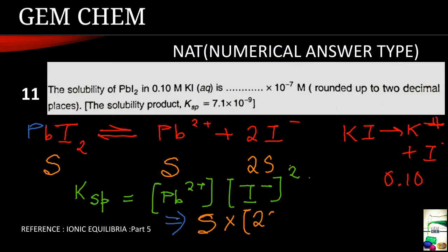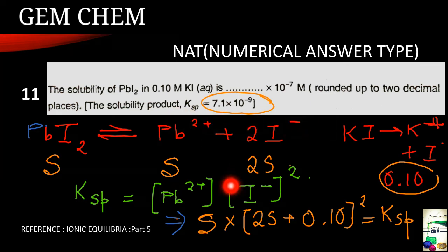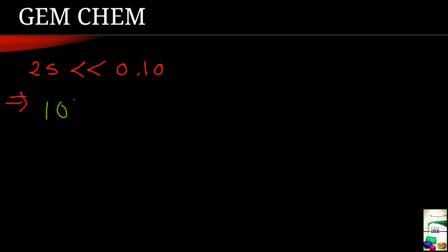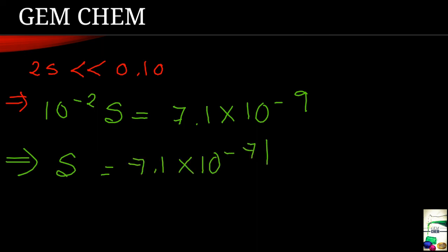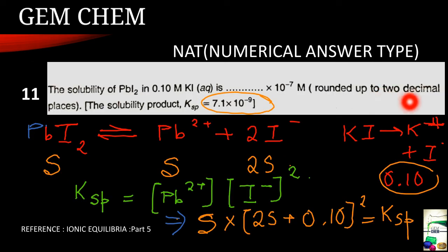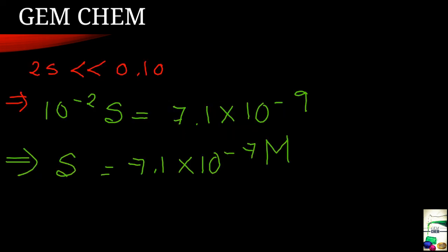Now we just substitute the values here, that is here Pb 2 plus is S multiplied by 2S plus this concentration of iodide 0.10 whole square and here we write the Ksp value. Now listen to it carefully, here the 2S value is much much smaller than 0.10 value so ultimately the expression which we can write is 10 to the power minus 2 into S only equals to 7.1 into 10 to the power minus 9. This is the Ksp given so ultimately the S comes to be as 7.1 into 10 to the power minus 7 molar. Now here it is asked to round up to two decimal places and the value should be in 10 to the power minus 7 molar so our answer must be 7.10.